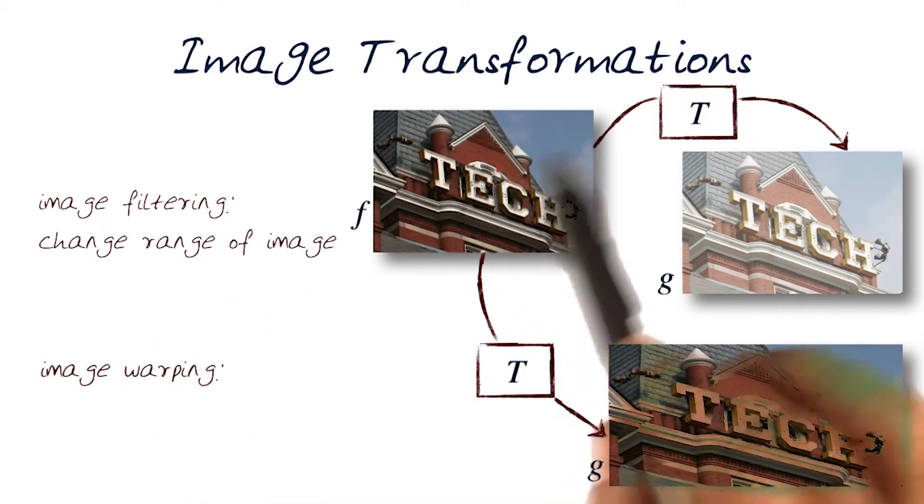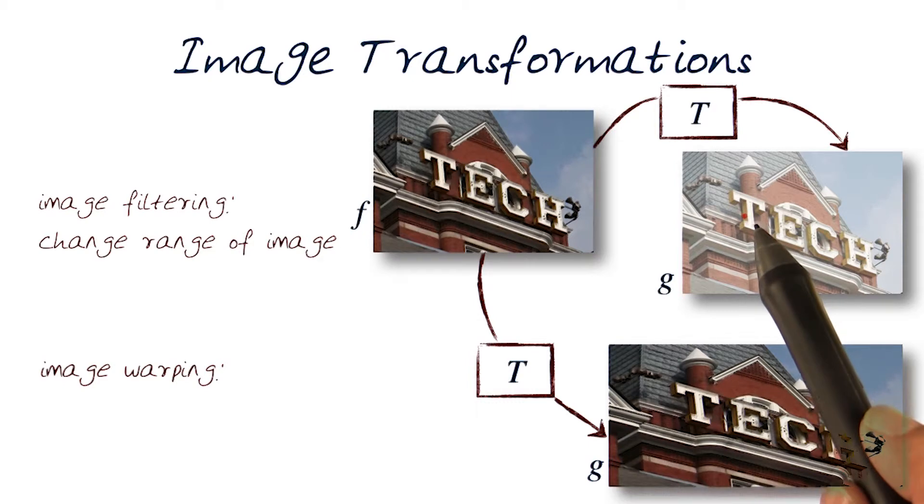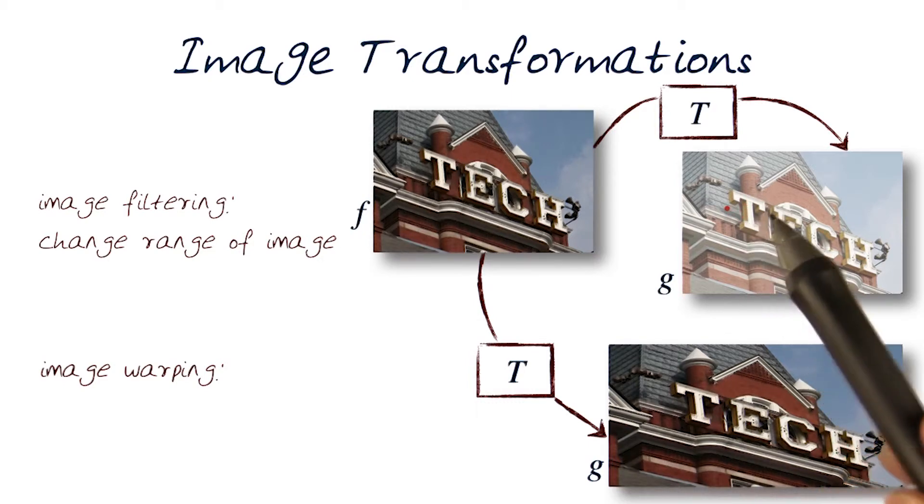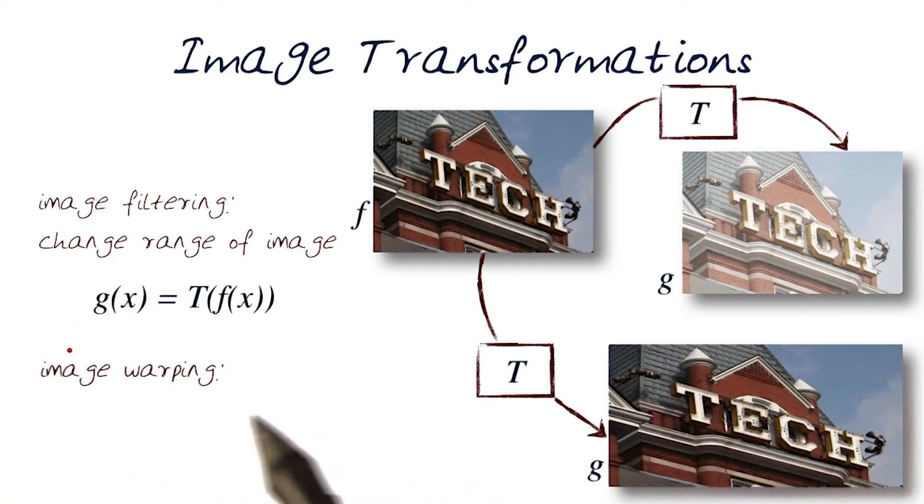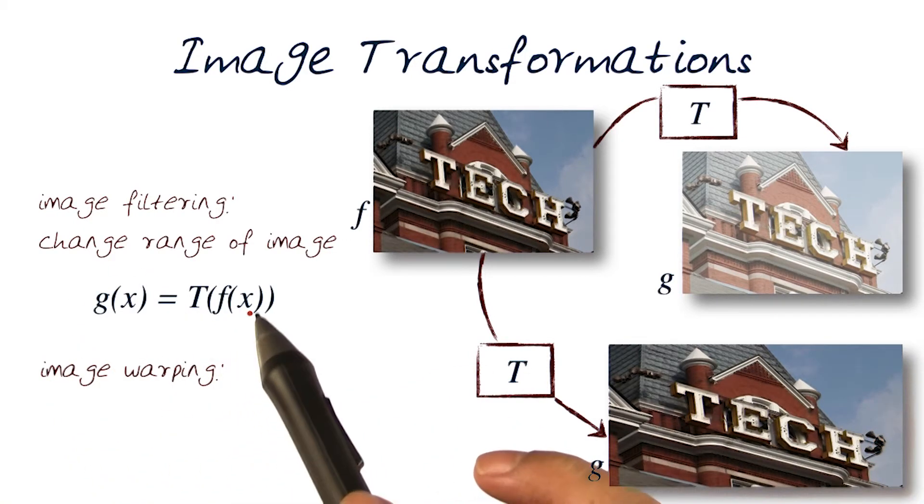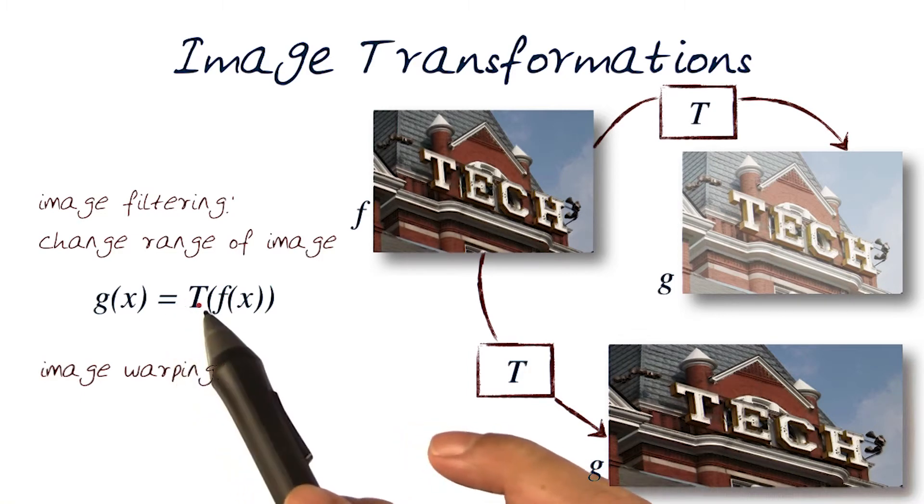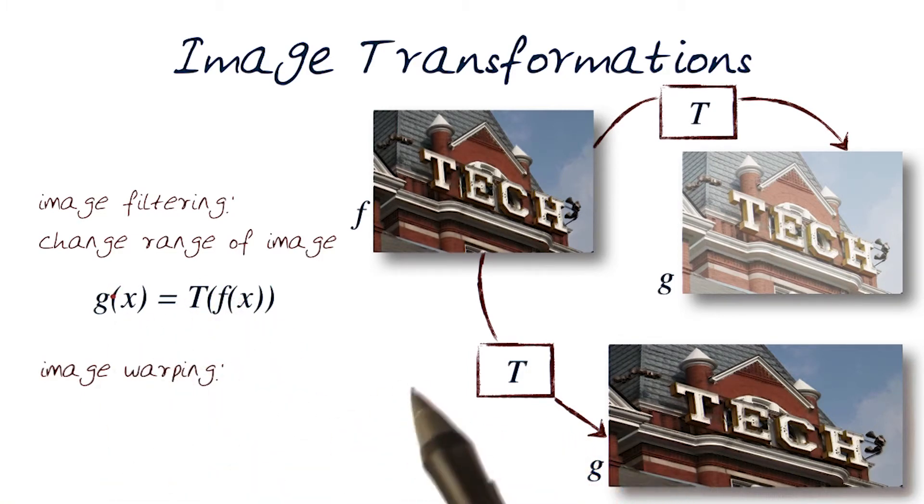So in the case of doing filtering, what we're basically doing is we're changing the range of the image, the inside values of the function itself. So basically to get the output image, what we have done is put in a function and transform the function itself to get the new image.